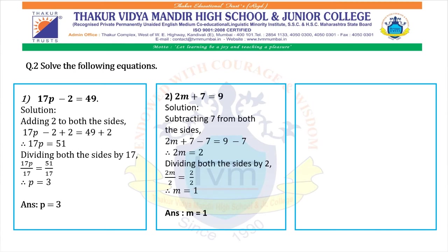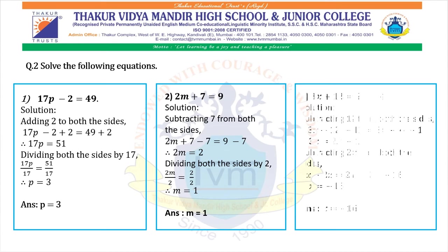Second: 2m plus 7 equals 9. We subtract 7 from both sides: 2m plus 7 minus 7 equals 9 minus 7. Therefore 2m equals 2. Now dividing both sides by 2: 2m upon 2 equals 2 upon 2. Therefore m equals 1. The answer is m equals 1.